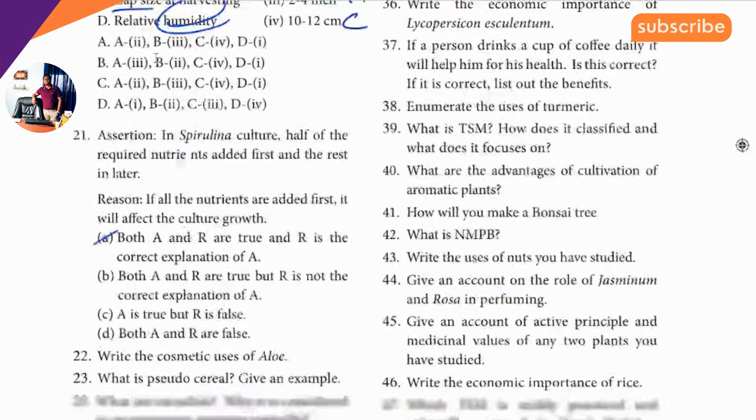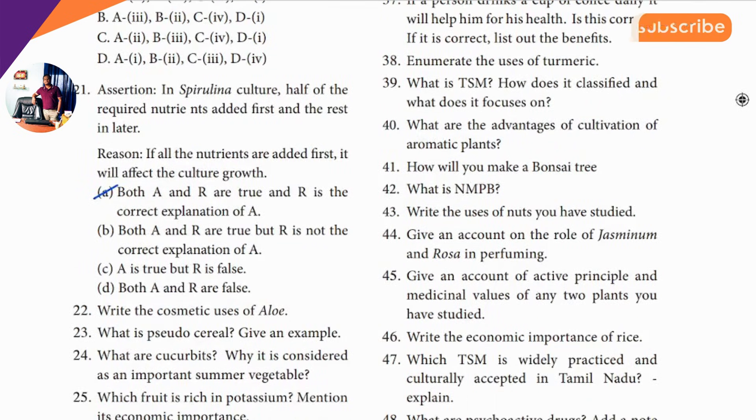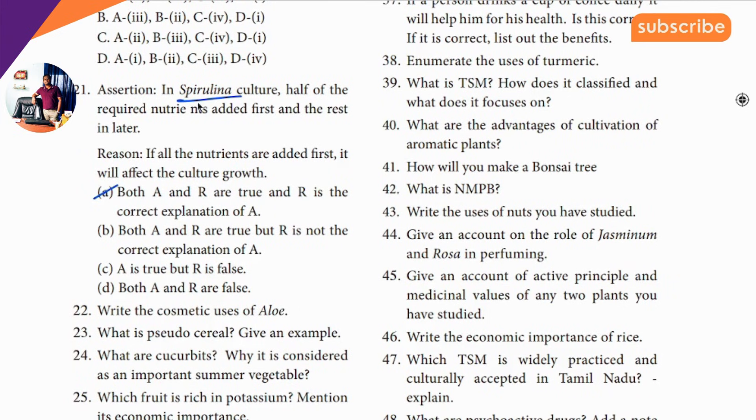Last question, assertion reason: anyways — separate — this is a spiral — both A and R are correct.